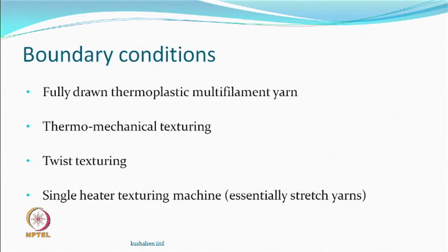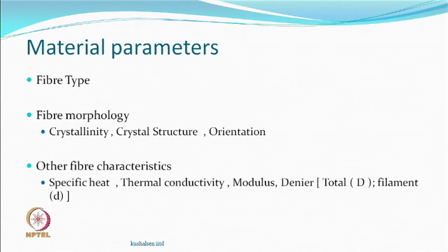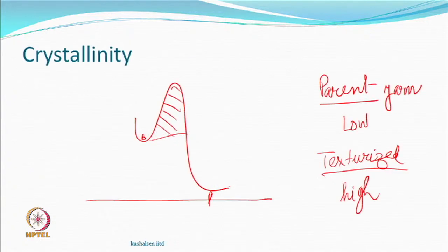The boundary conditions remain the same: we are working on thermoplastic multifilament yarns, looking at crimp texturing, thermo-mechanical texturing, and a single heater machine. The material parameters include fibre morphology — crystallinity, crystal structure, orientation — and other characteristics like thermal conductivity, modulus, denier, and filament count. We remember that the parent yarn crystallinity should be as low as possible, and after texturing, if the crystallinity of the textured yarn is high, that is good for us.